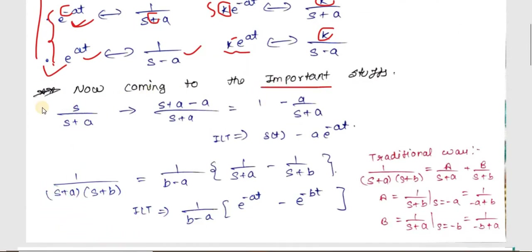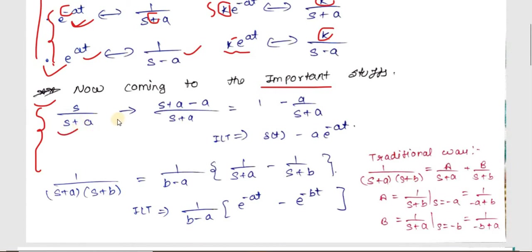Now let's come to the main point — the important steps. Going from time domain to Laplace transform is easy, but the toughest part is coming from the Laplace domain back to the time domain. We will see various strategies for that. For example, if you have s/(s+a), we usually think of using a quotient-plus-remainder approach, but here we can simply adjust the numerator and get our answer directly.